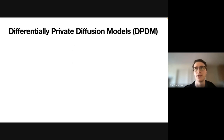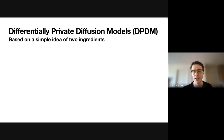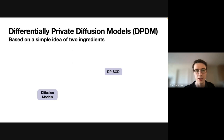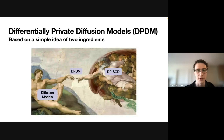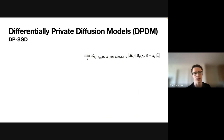We are now at the stage where we can talk about differentially private diffusion models. It's based on a simple idea with two ingredients. As a small anecdote: when I started this project, we had lots of ideas about how to use the inherent noise of diffusion models to show they're differentially private in themselves, but all those directions failed. So in the end, what we resorted to — and wanted to see if it works — is: take diffusion models, take DPSGD, a well-known algorithm for training neural networks differentially privately, and that is basically differentially private diffusion models.